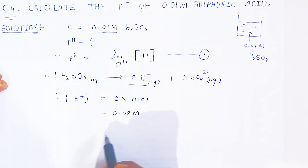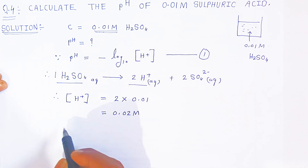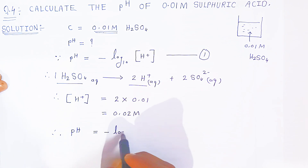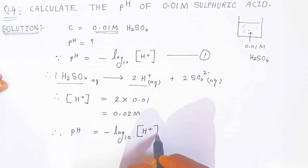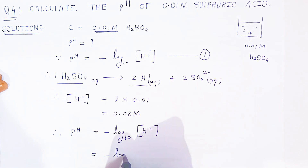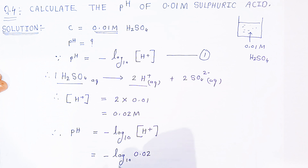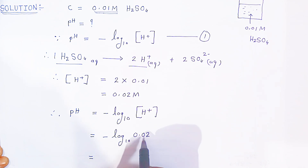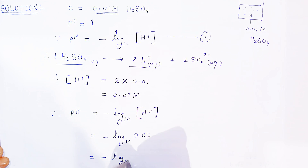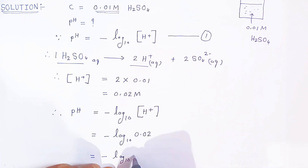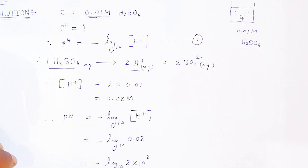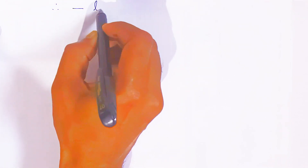Now we know the formula: pH equals negative log base 10 of the H⁺ concentration. We put in the value: pH = −log₁₀(0.02). Now, 0.02 can be written as 2 × 10⁻². So we have pH = −log₁₀(2 × 10⁻²).